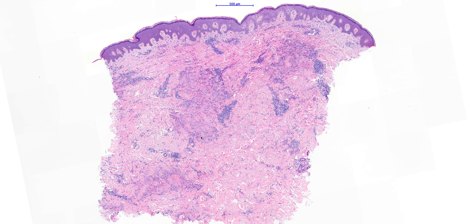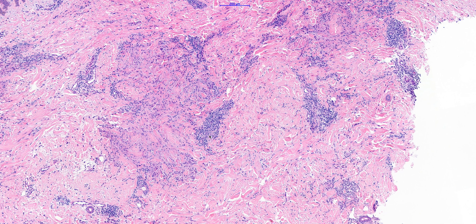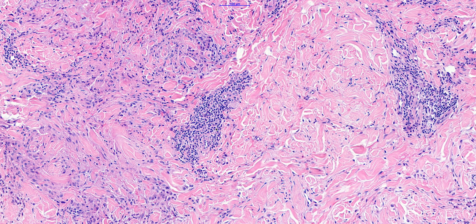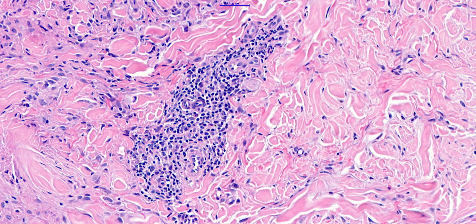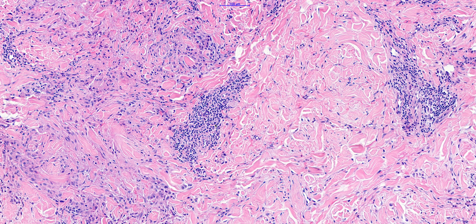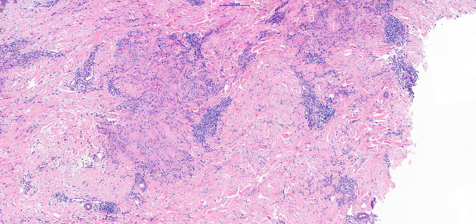As well as the areas of necrobiotic granulomatous inflammation, you very often also get a perivascular lymphocytic inflammatory infiltrate. Sometimes you can see some eosinophils mixed in there as well — quite hard to see many in this example, but it's not infrequent to see eosinophils mixed in with granuloma annulari.